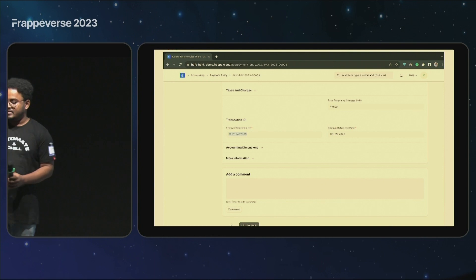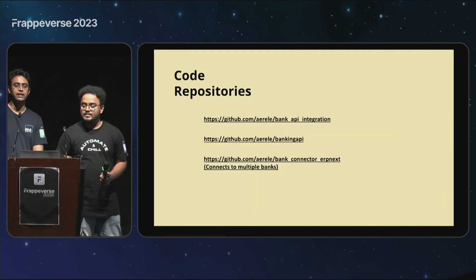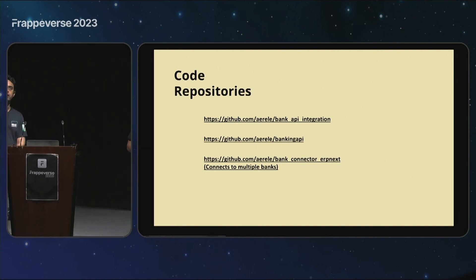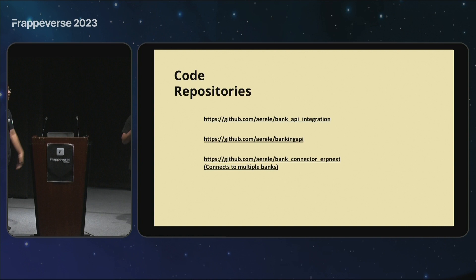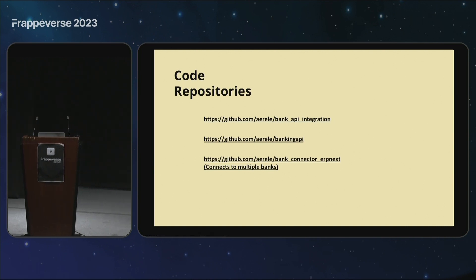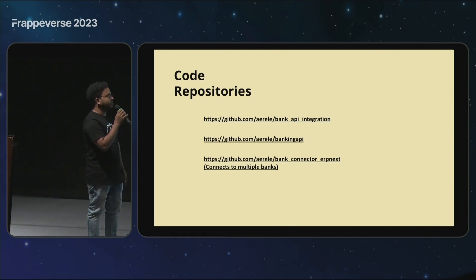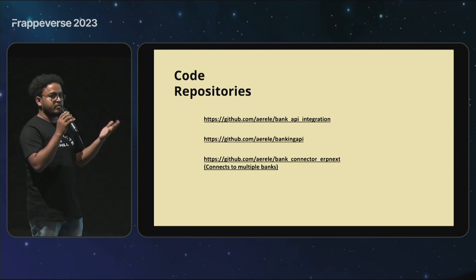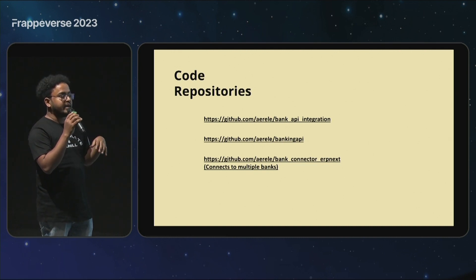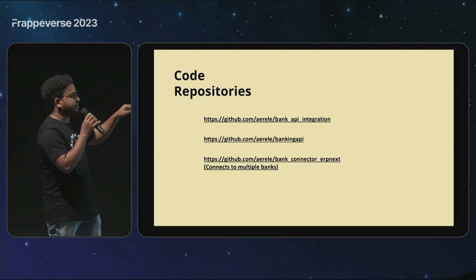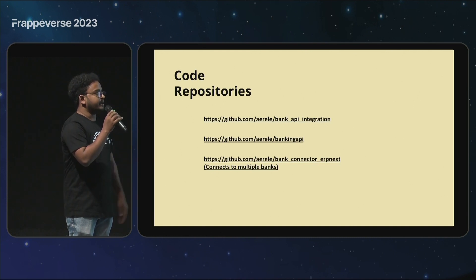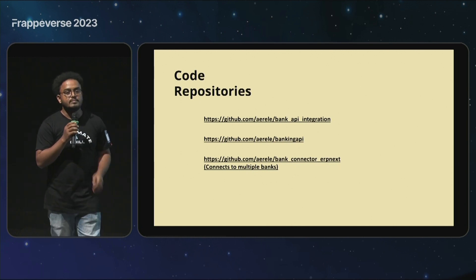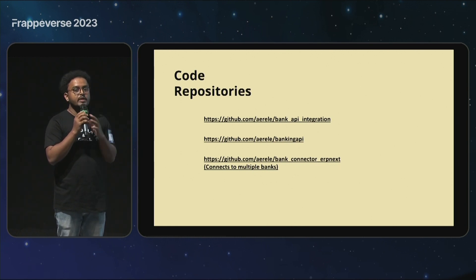This is all we wanted to present on the bank integration. This is a complete open source project. The first two apps were started a couple of years ago when only ICICI Bank was there. The second URL is a Python library where we planned to bring multiple banks. Now we are retiring the first two, and the third one — a bank connector ERPNext app in which any bank can be connected — will be the going-forward solution. It is all open source and available on the GitHub account.